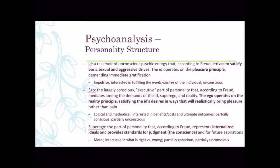If the ego is ignored, we get ourselves into trouble by not thinking about consequences. If the ego gives in to the id, the superego interacts by making you feel guilty. An underdeveloped superego means you don't feel guilt; an overdeveloped superego makes you judgmental and close-minded. The textbook illustration shows the id as fully unconscious, while the superego and ego are partially conscious and partially unconscious.